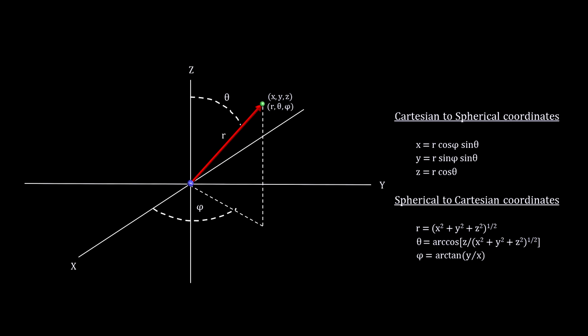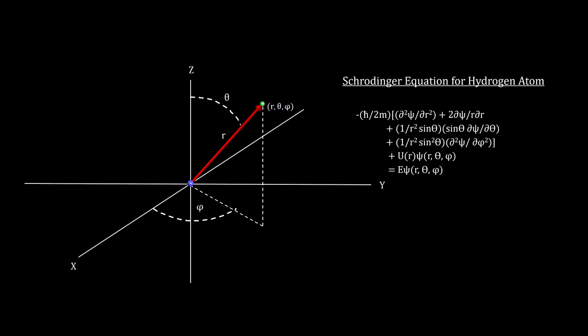But when we move from matter systems to matter wave systems, we move from Newtonian equations to Schrodinger's equations. The relationships between energy, angular momentum, and orientation are quite different.